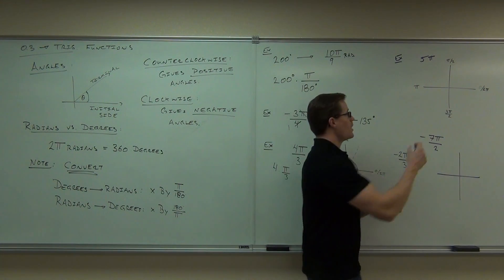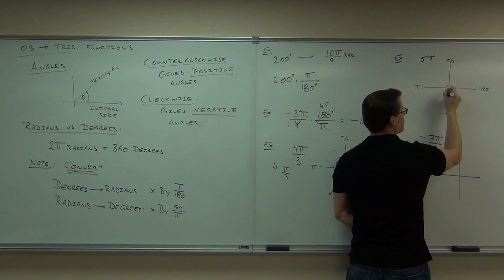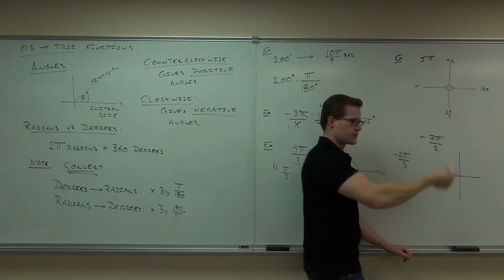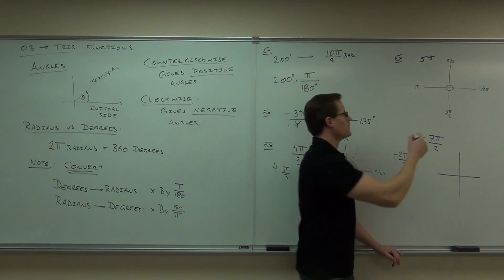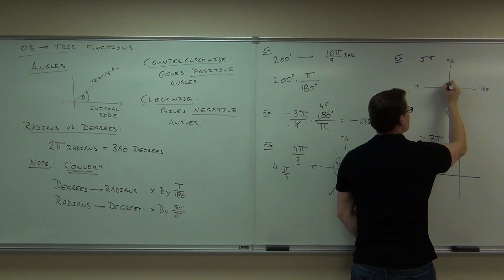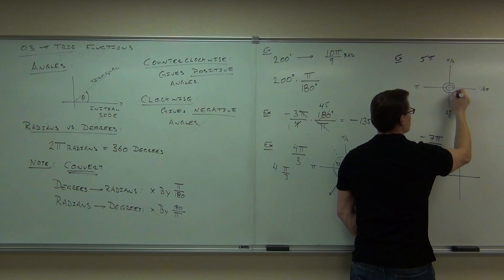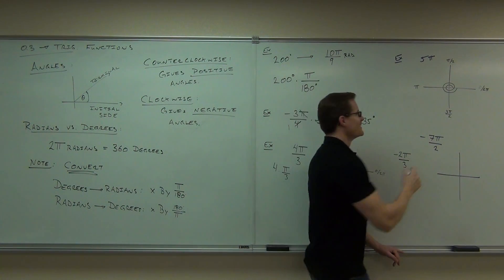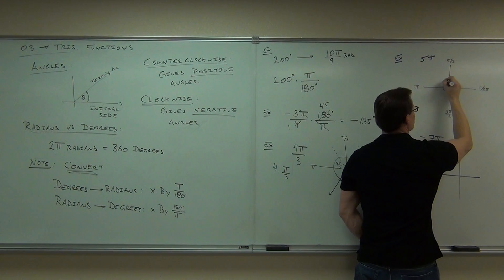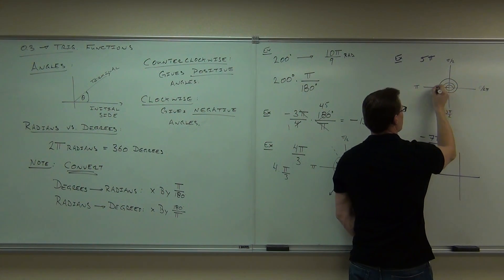So I'm going to start here and go, well here's 1 pi, 2 pi. That's a full circle, isn't it? 3 pi, 4 pi, you getting dizzy yet? Cool. And then one more, that's going to give us 5 pi.